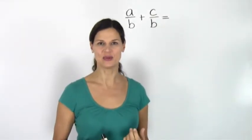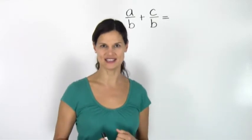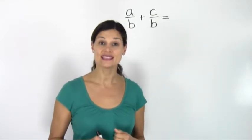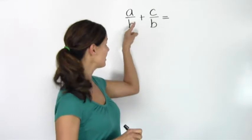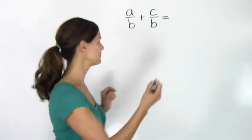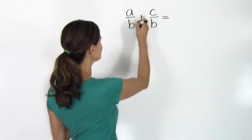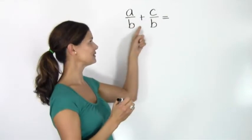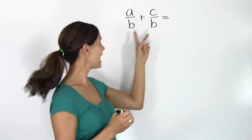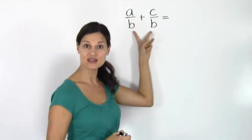Adding fractions is simple when the fractions have a common denominator. That means that the number on the bottom of the fraction is the same. So in this case, if I have a over b plus c over b, I can see that these have the same denominator.